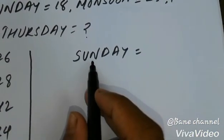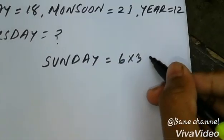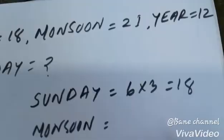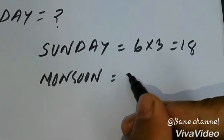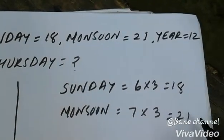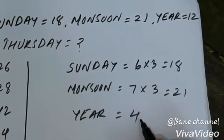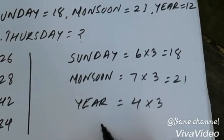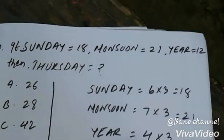SUNDAY is 18, MONSOON is 21, YEAR is 12. THURSDAY equals what? SUNDAY equals 6 times 3 equals 18. MONSOON equals 7 times 3 equals 21. YEAR equals 4 times 3.